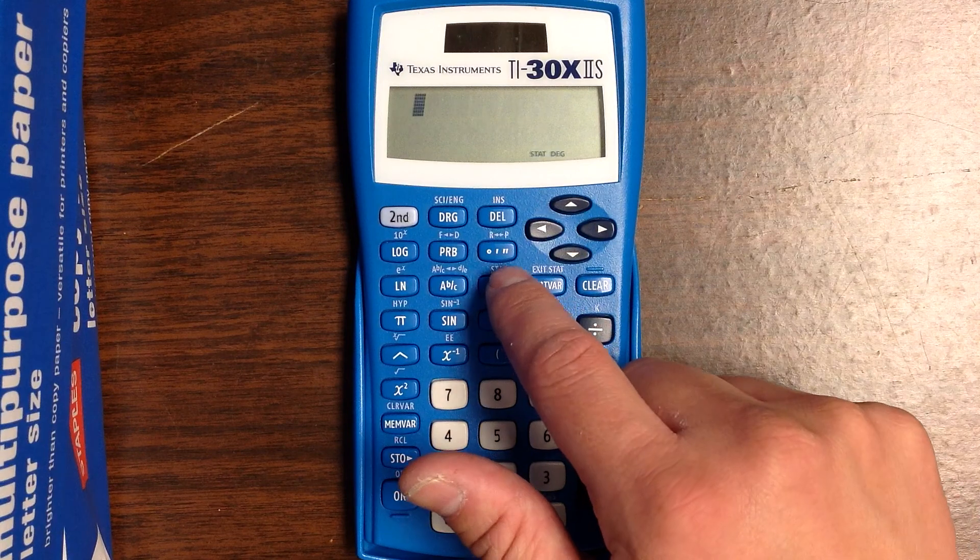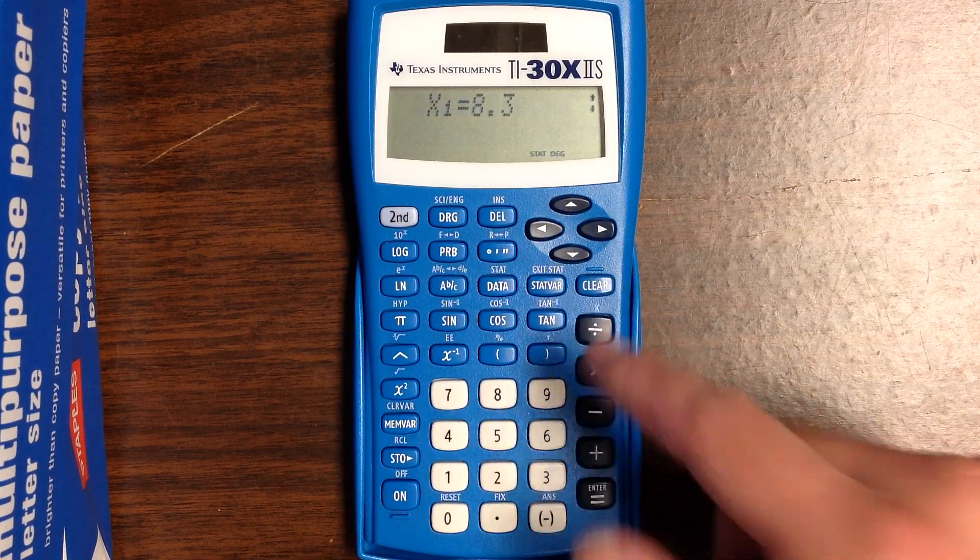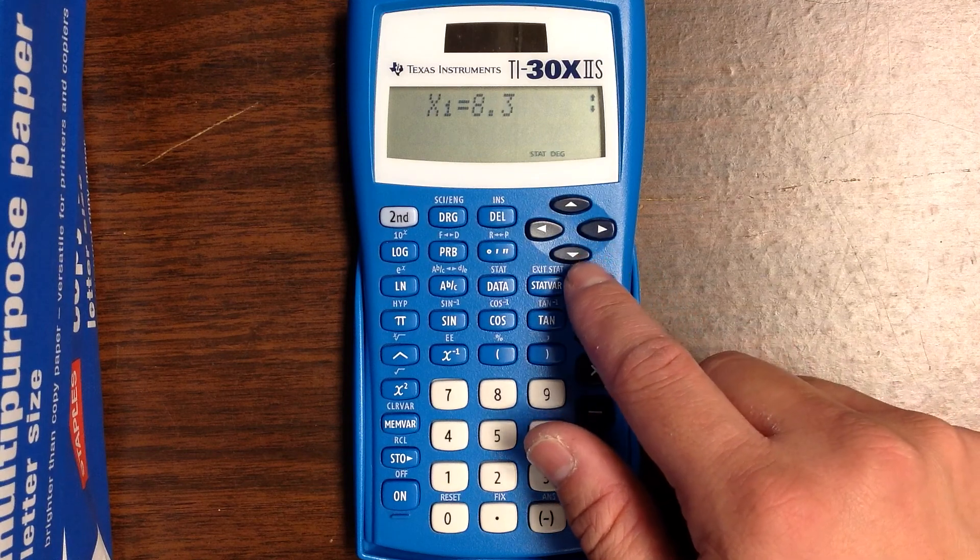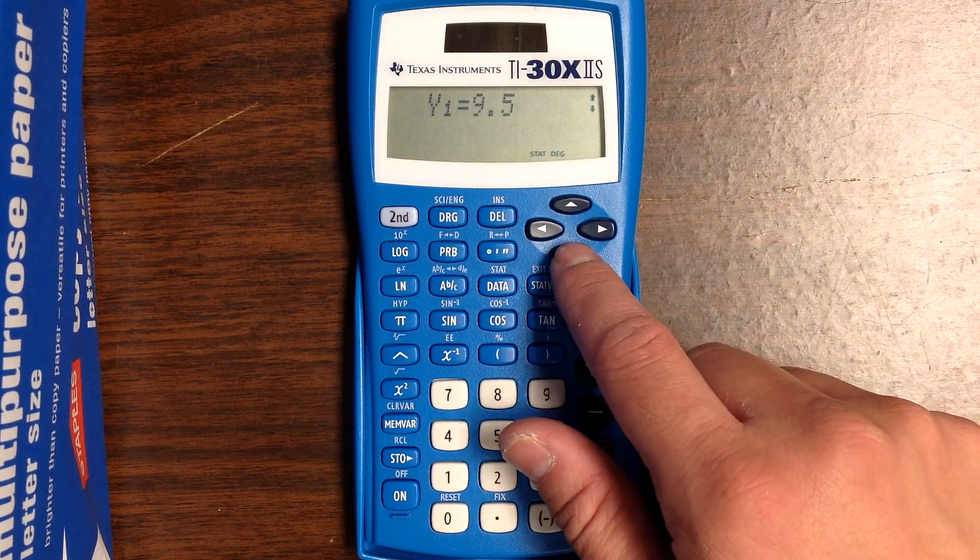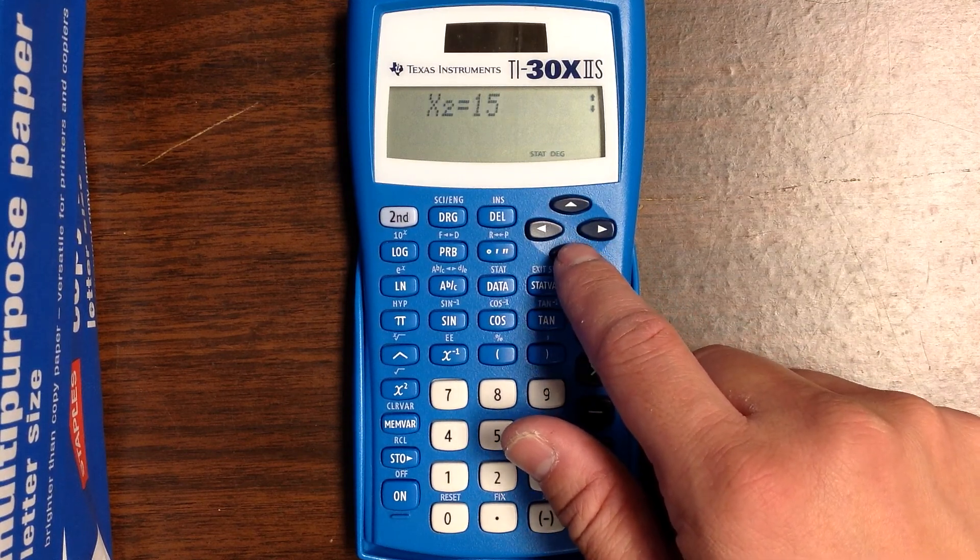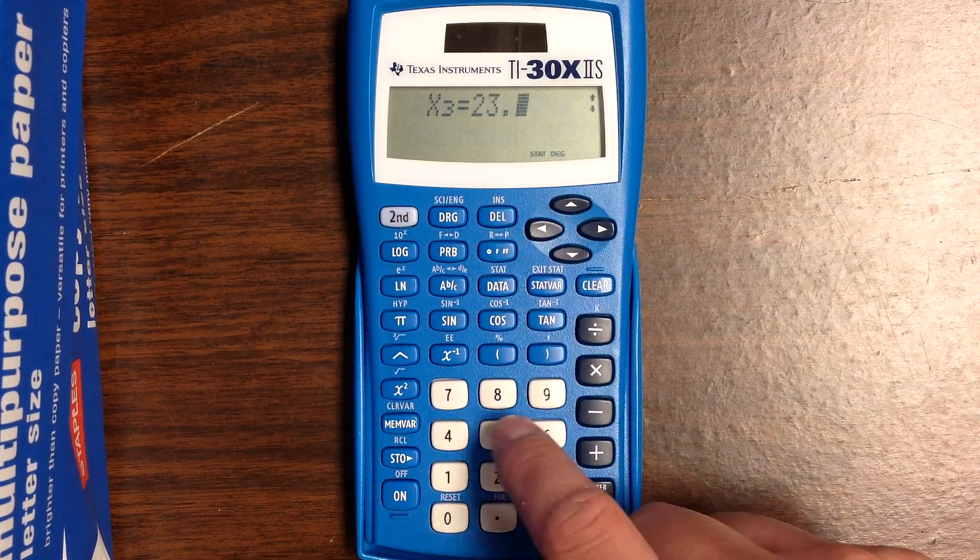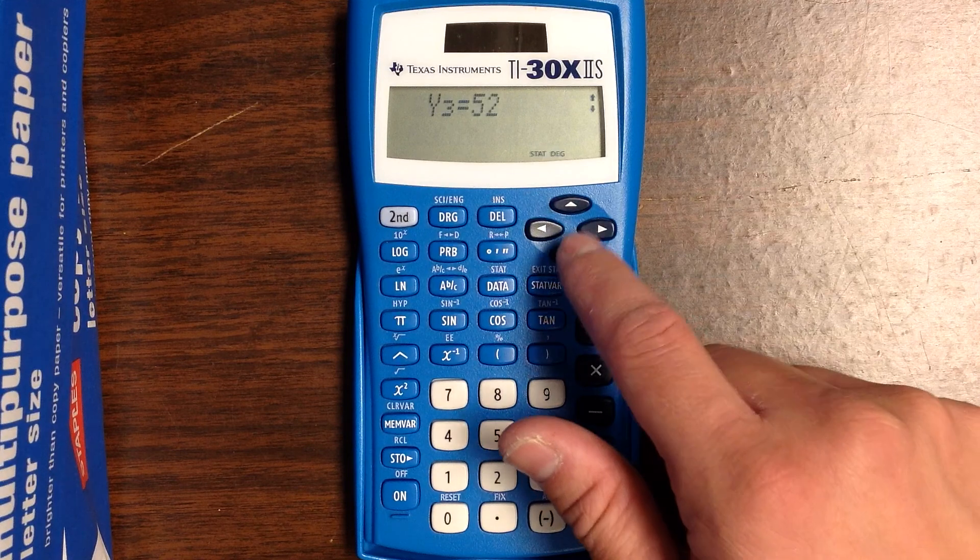Now you need to input your data. Press the data button. I've already entered in the X and Y values. The first X value is 8.3, Y1 is 9.5, and so on. X2 is 15, Y2 is 22. To enter it, type it in and press the down arrow to get to the corresponding Y.